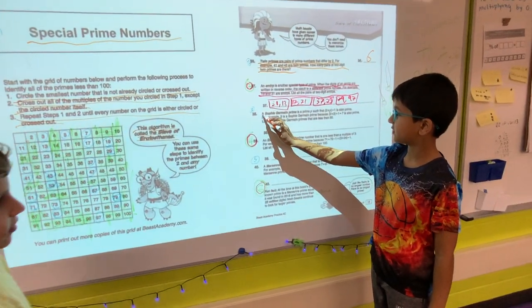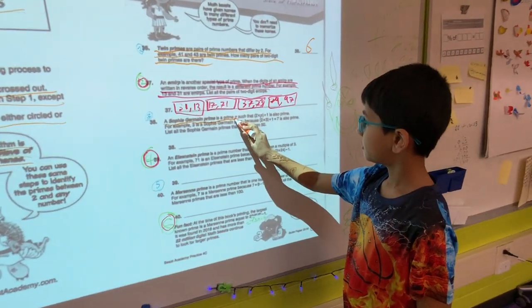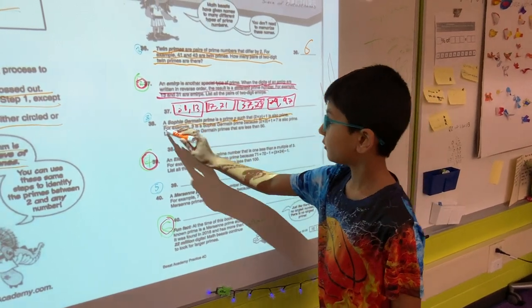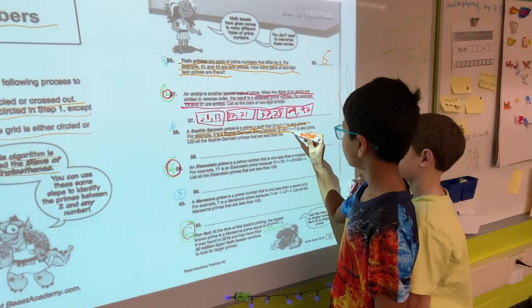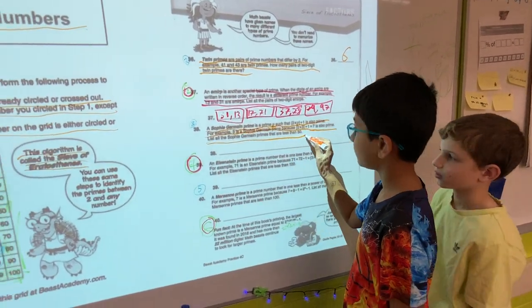Now we are going to do Sophie Germain primes. A Sophie Germain prime is a prime p such that 2 times p plus 1 is also prime. For example, 3 is a Sophie Germain prime because 2 times 3 plus 1 equals 7 is also prime. List all the Sophie Germain primes that are less than 50.